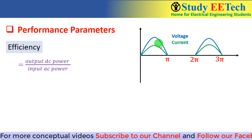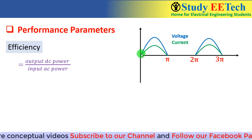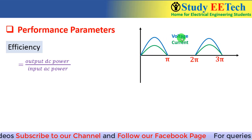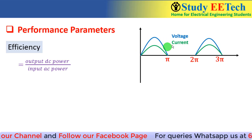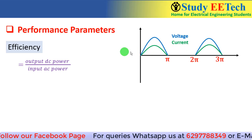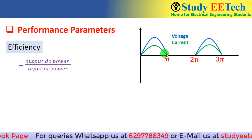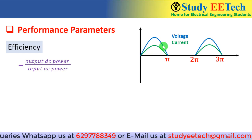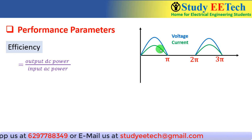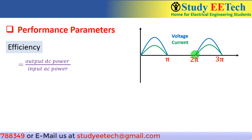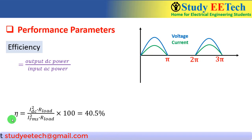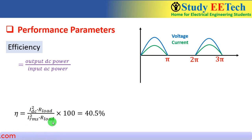We have seen this waveform earlier where the blue line represents the output voltage and the green line represents the current. We have considered a resistive load. From 0 to π in the positive half cycle we get the voltage and current in the output, and from π to 2π we do not get any output voltage. From the definition of efficiency we can write: η = (Idc² × R_load) / (Irms² × R_load) × 100.